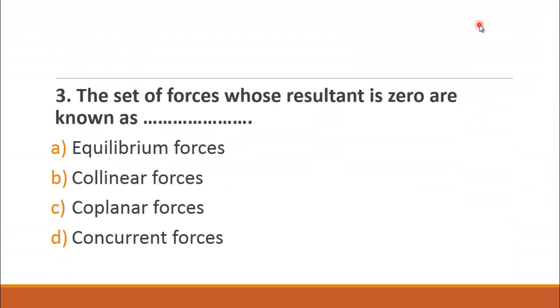MCQ number three is: The set of forces whose resultant is zero are known as? A. equilibrium forces, B. collinear forces, C. coplanar forces and D. concurrent forces. Equilibrium forces mean that the forces which are in opposite direction and same in magnitude. So the resultant of equilibrium forces are always zero. The right choice for this question is A. equilibrium forces.